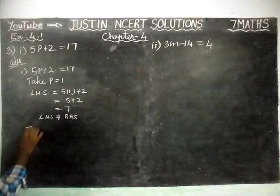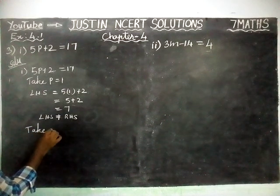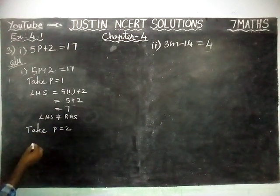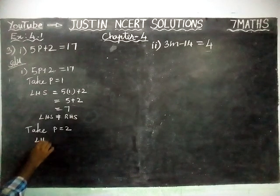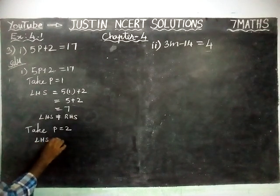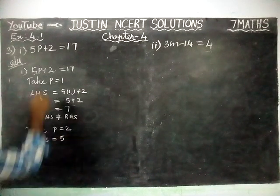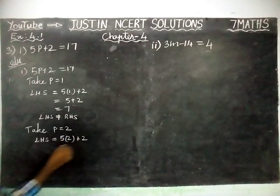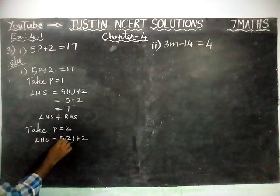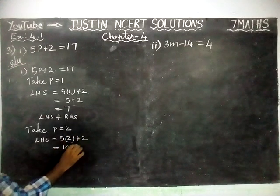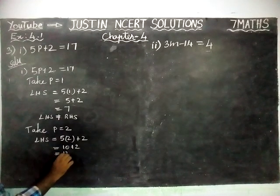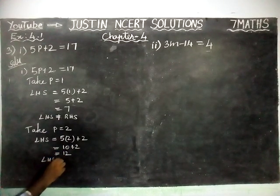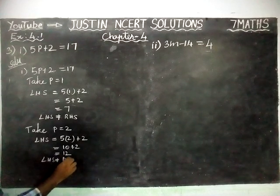Next, we are taking P is equal to 2. So, LHS is equal to 5 into 2 plus 2 is equal to 10 plus 2 is equal to 12. Here also, LHS is not equal to RHS.